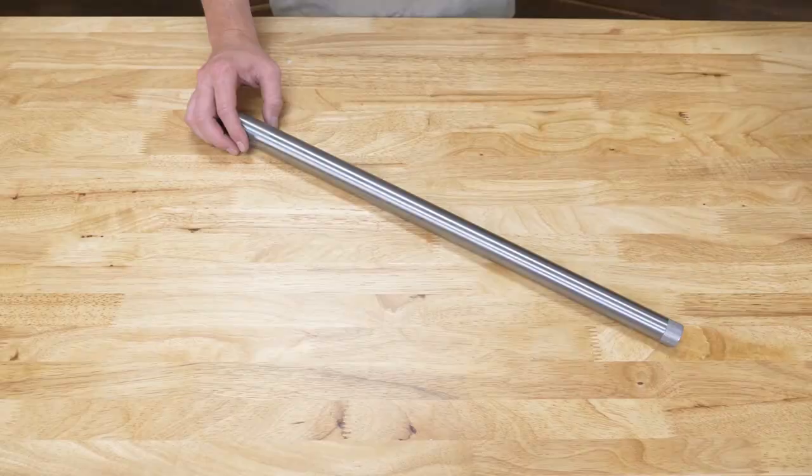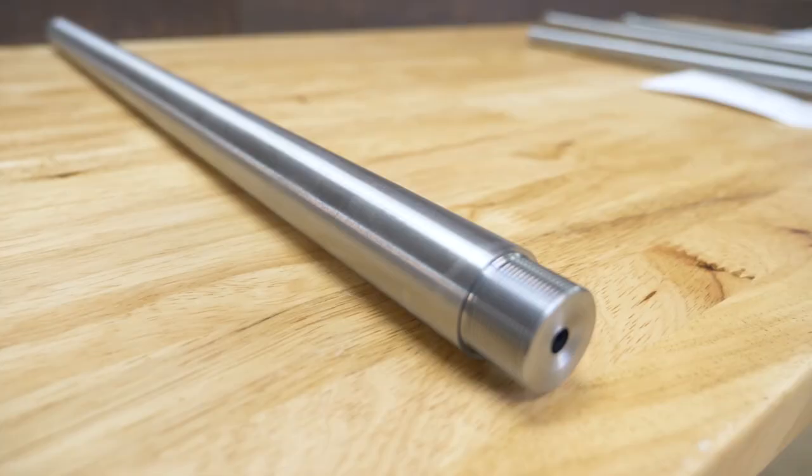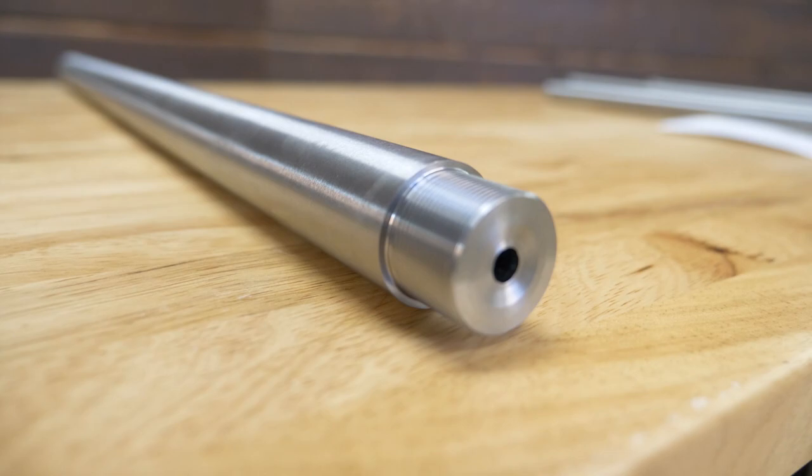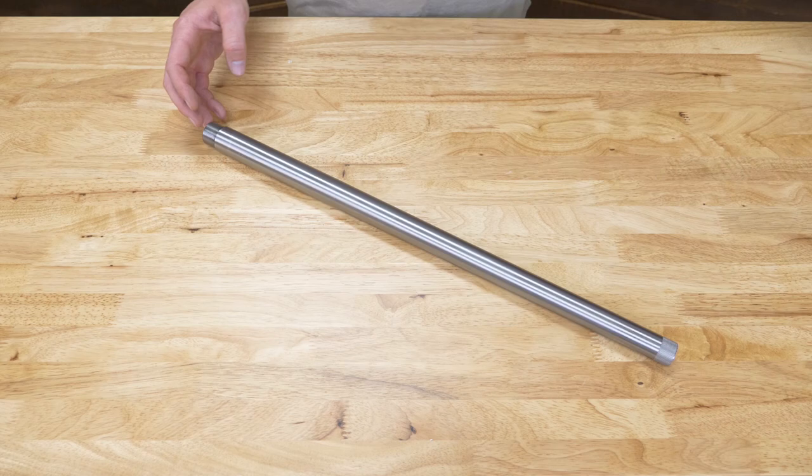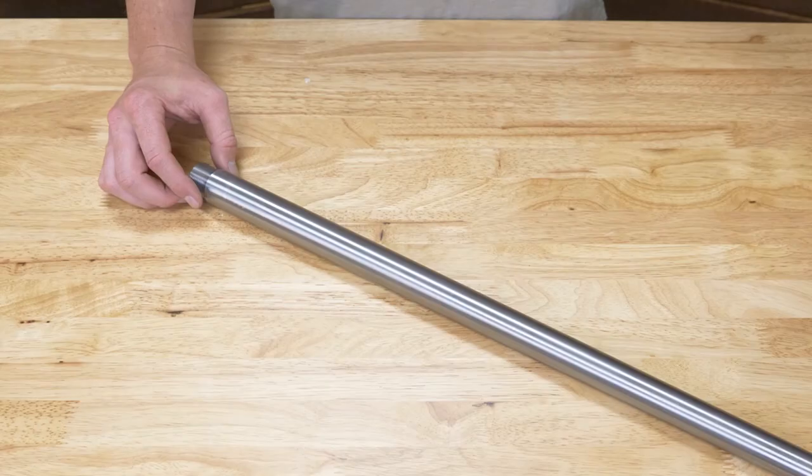Alright, the next contour we are going to discuss is the varmint contour. Sitting in front of me is an M24 contour, which is a variant of a varmint contour. This is a shoulder pre-fit for a Bighorn TL3 short action. So this is a fixed shoulder barrel, again with a threaded muzzle.